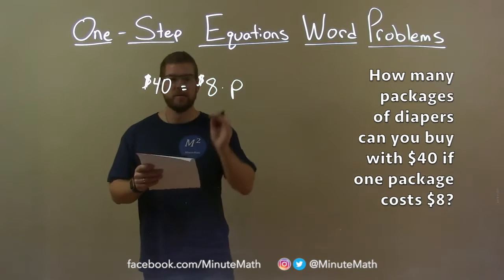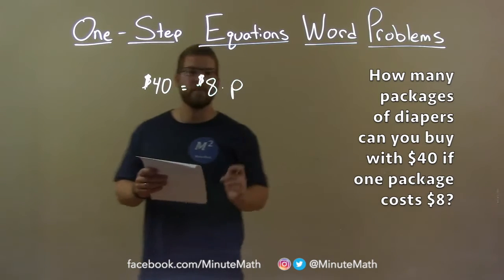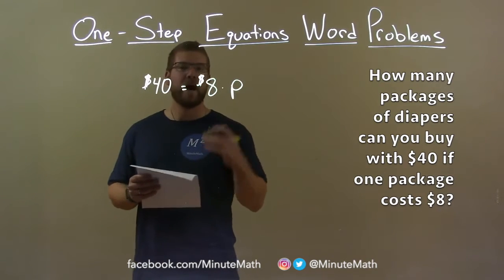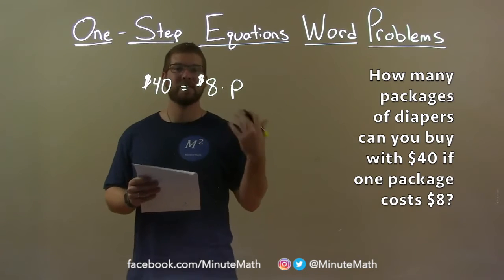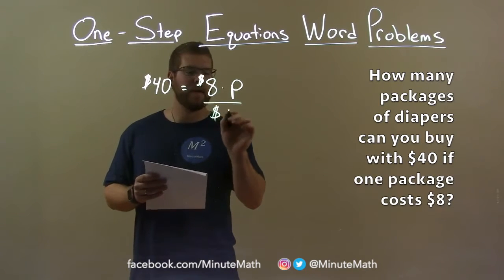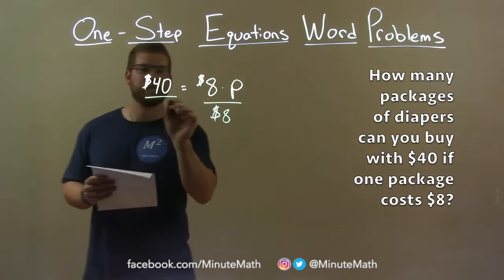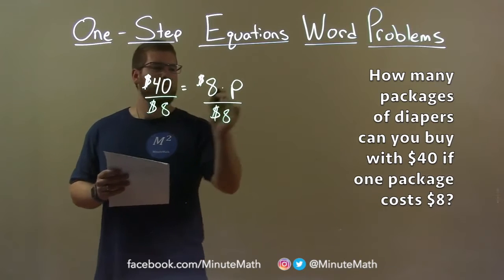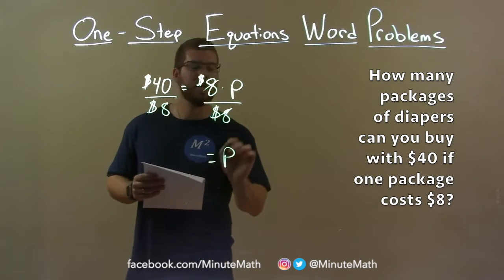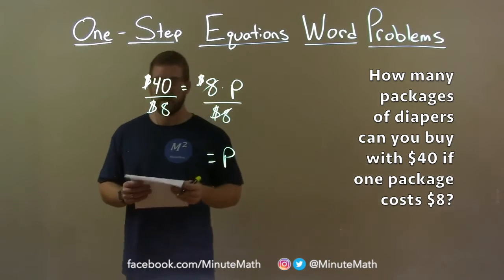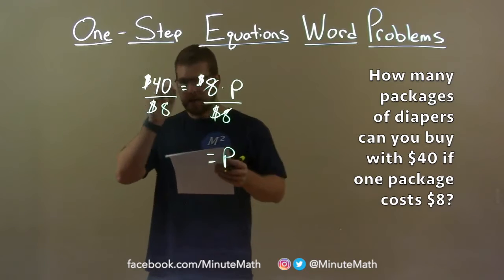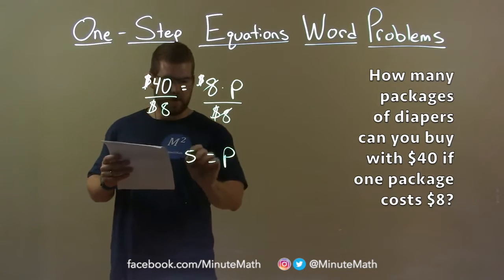Now we want to solve for P. P is being multiplied by 8, so the opposite of multiplication is division. Divide both sides by $8 — the 8's cancel, giving us P by itself. $40 divided by $8 is 5.